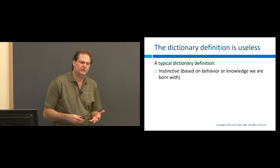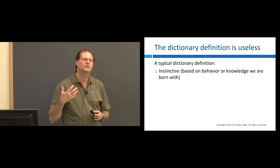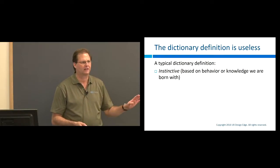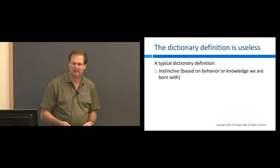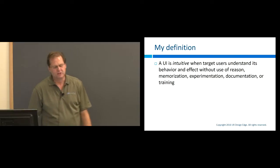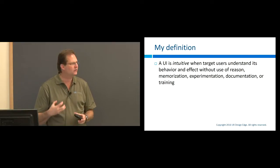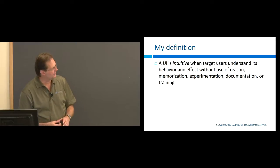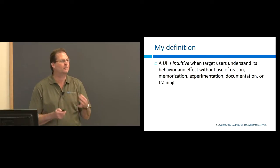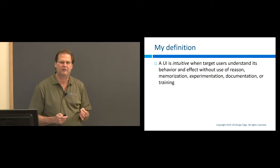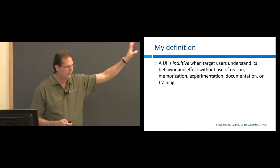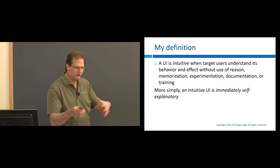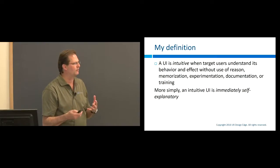The dictionary definition of intuitive is 'instinctive,' meaning knowledge and behavior we're born with — and that has nothing to do with what we're talking about. Here's the definition I like to use: a UI is intuitive when target users understand its behavior and effect without the use of reason, memorization, experimentation, documentation, or training. If we have to think, experiment, memorize, or need documentation or training — that means it's not intuitive by definition. Simply put: a UI is intuitive when it's immediately self-explanatory.